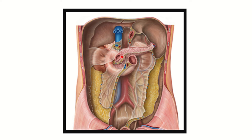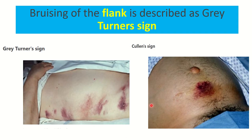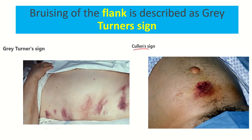When hemorrhage occurs in the retroperitoneal space, it cannot come to the front of the peritoneum, so it will collect in the flank region on both sides. Here we can see the signs of hemorrhage — in one picture there is hemorrhage just below the umbilicus, and in another we can see blood present in the flank area. The blood coming to the anterior abdominal wall near the umbilicus is called Cullen's sign.